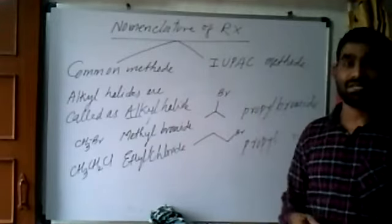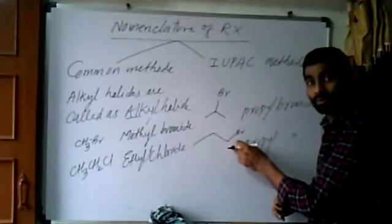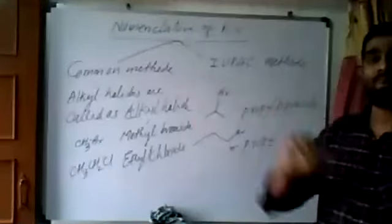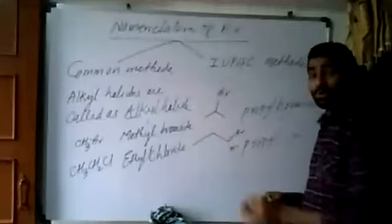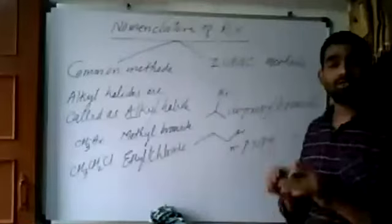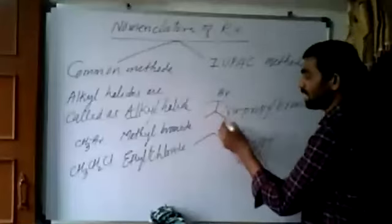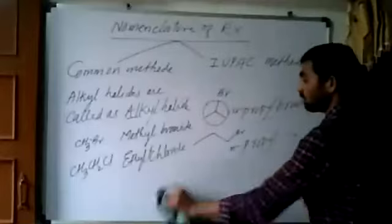Common method says that when the halogen is attached to first carbon of propane, label it as n-propyl, means normal propyl chain. So n-propyl bromide. And when halogen is attached to middle carbon of the propane, label it as isopropyl bromide. So this we have to remember. If bromine is here, isopropyl bromide. And if chlorine is there, isopropyl chloride and isopropyl iodide like this. So this group is called as isopropyl group. One more example we will take.